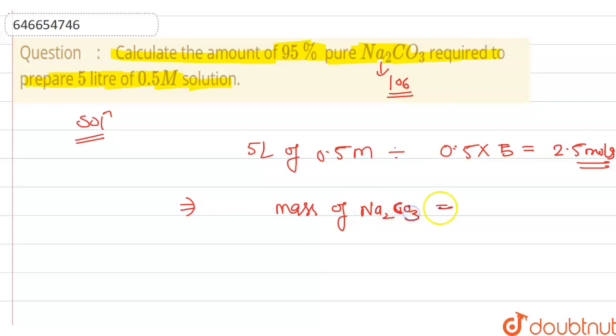Number of moles is 2.5, so mass of Na2CO3 is equal to 2.5 into molar mass 106, that is equal to 265 grams for 100% solution.